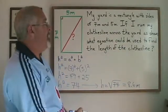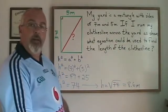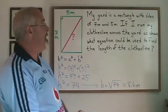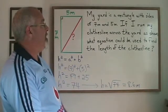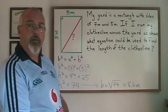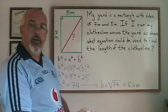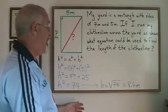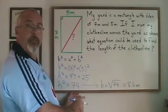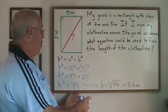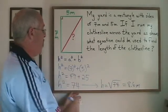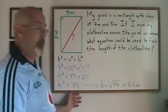But the student here is not being asked to find the length of the clothesline. The student is being asked to find an equation that could be used to find the length of the clothesline without simplifying, without calculating. The closest thing I have written down yet that would answer the question is this: h squared is equal to 7 squared plus 5 squared.